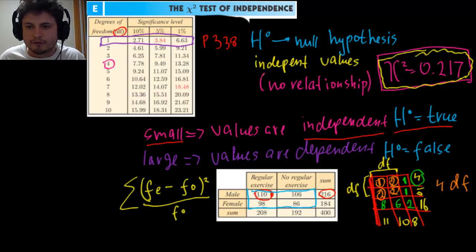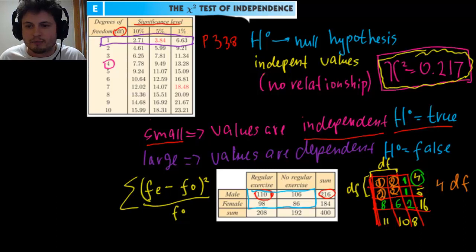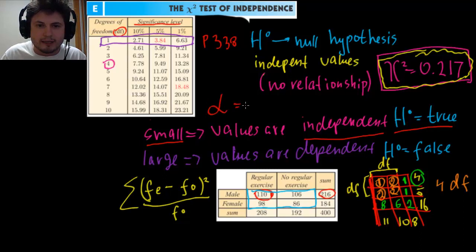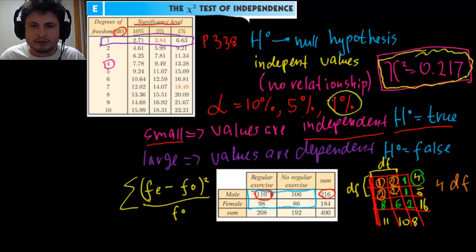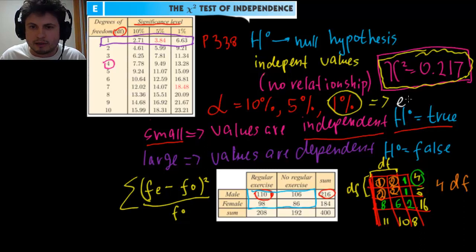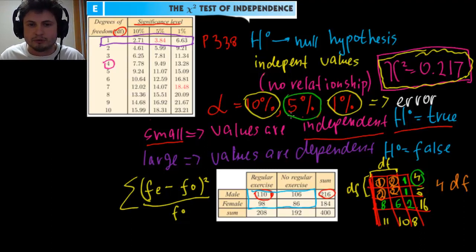There's also something called significance level, which appears across the top of the table: 10%, 5%, and 1%. This is what we refer to as the alpha level. Alpha of 10% is the least accurate, 5% is the most commonly used (medium accuracy), and 1% is the most accurate — meaning you're allowing only one percent error. The 5% level is typically the standard choice.